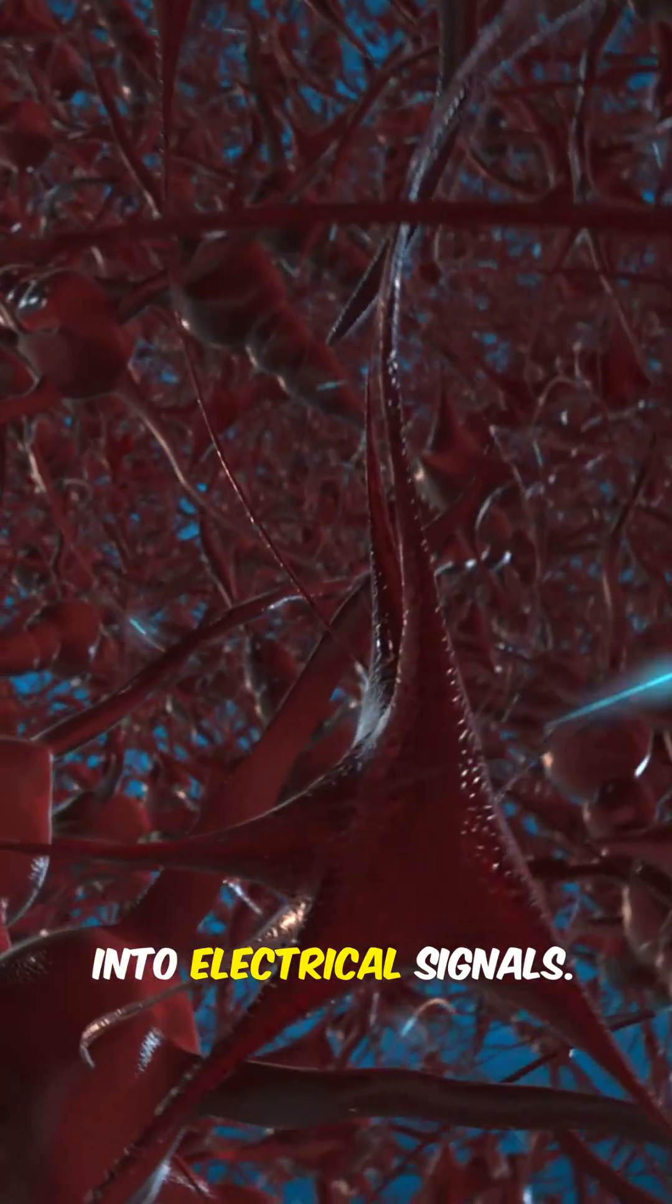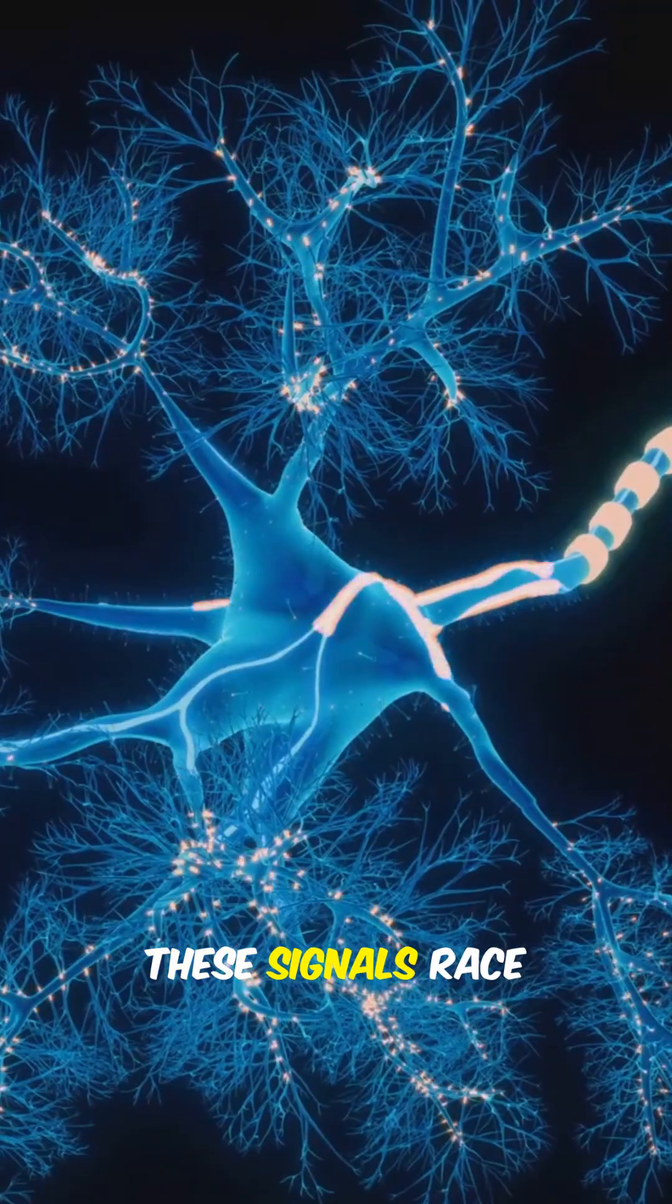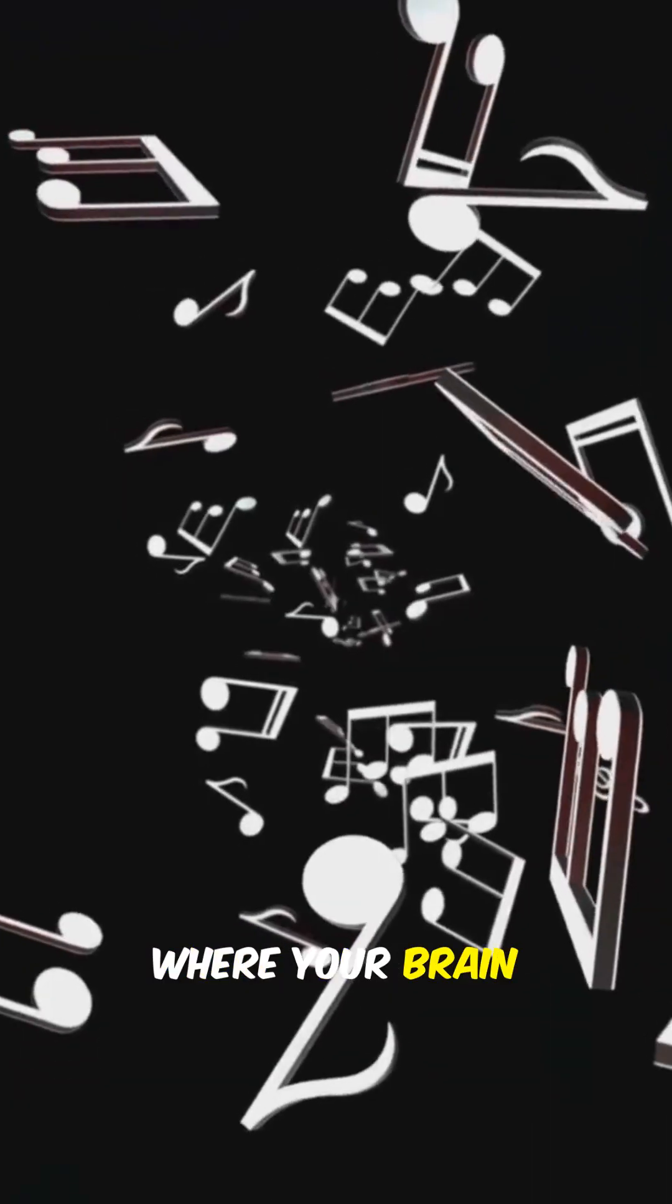Sound waves travel through your ears and get transformed into electrical signals. These signals race into the brain's auditory cortex, where your brain starts making sense of the melody and rhythm.